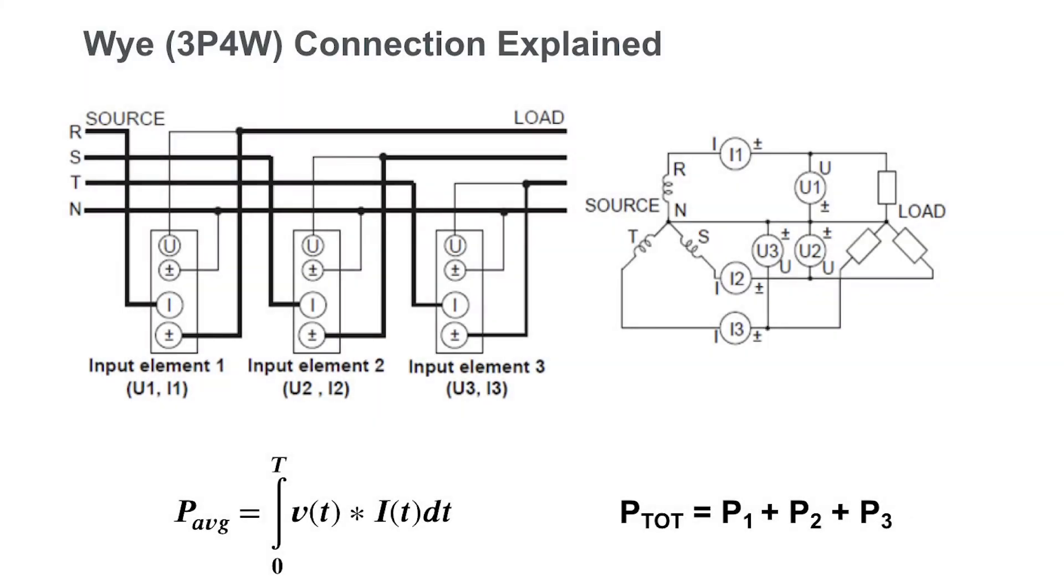When we have a three-phase system with a neutral available, we refer to this system as a three-phase four-wire system. This is because we have the three individual phases of the system as well as a neutral as a common voltage reference.